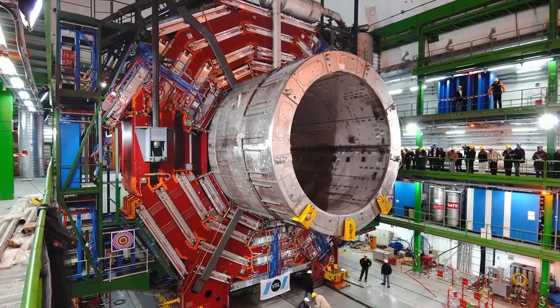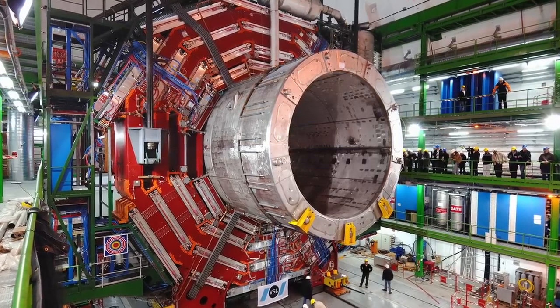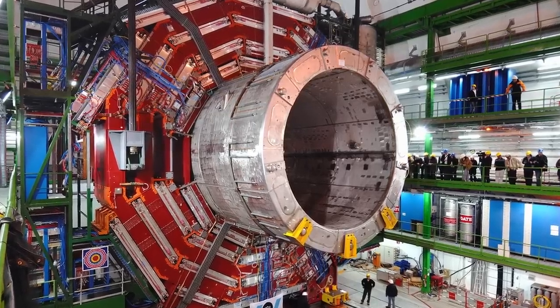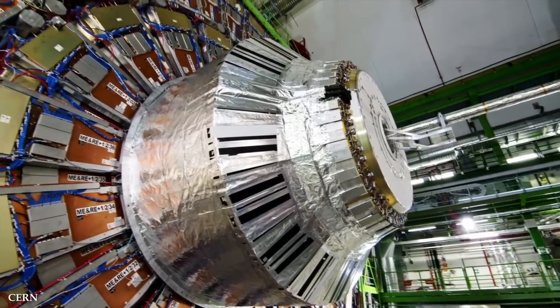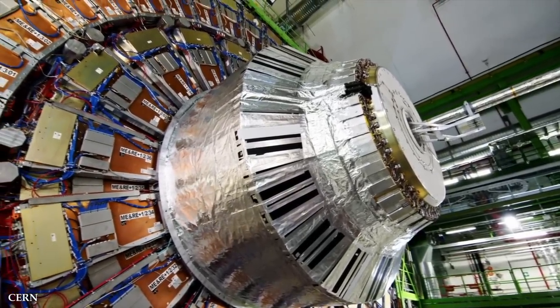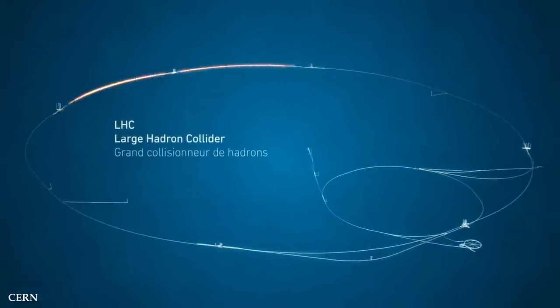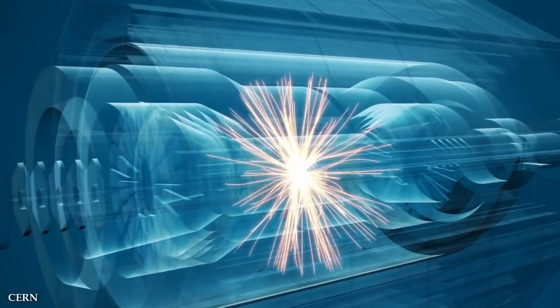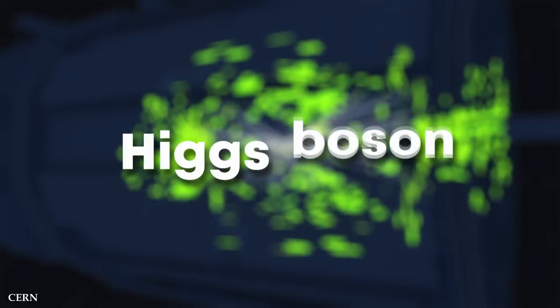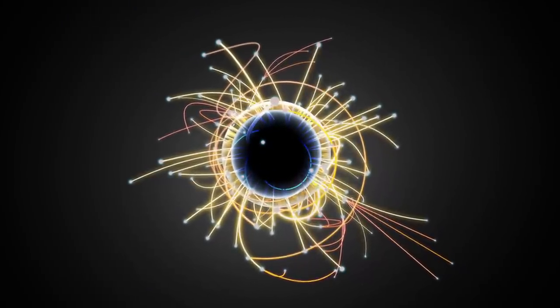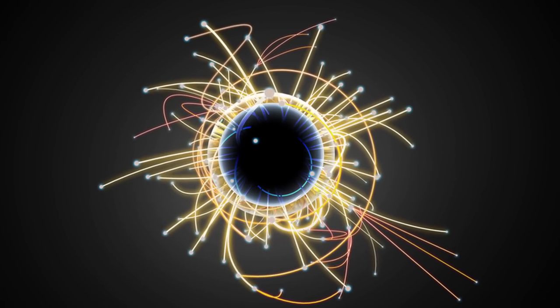In addition to dipole magnets, the LHC also employs quadrupole magnets. These magnets create a varying magnetic field that focuses the particle's beam, compressing them in both horizontal and vertical directions. This focusing helps to increase the density of the particles and enhance the chances of collision when the beams cross paths. And it definitely works. One of the most significant achievements of the LHC is the discovery of the Higgs boson in 2012. This elusive particle, often referred to as the God particle, plays a crucial role in our understanding of how particles acquire mass, and earned Francois Englert and Peter Higgs the Nobel Prize in Physics in 2013.